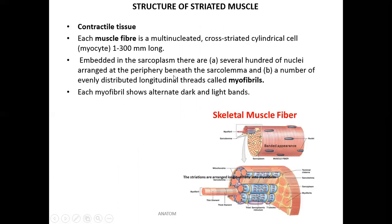The skeletal muscle is a contractile tissue made of muscle fibers. Each fiber is multi-nucleated, with flat nuclei arranged at the periphery. They are cylindrical shaped cells. The cytoplasm of the muscle fiber is called sarcoplasm, which contains many nuclei arranged at the periphery beneath the sarcolemma — the cell membrane of the muscle.